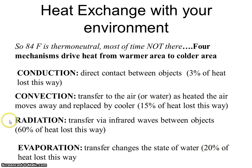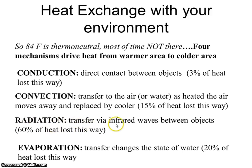Radiation is the main mechanism of heat loss — a transfer between objects without direct contact — accounting for about sixty percent of heat lost. This is also how we receive energy from the sun, including heat.